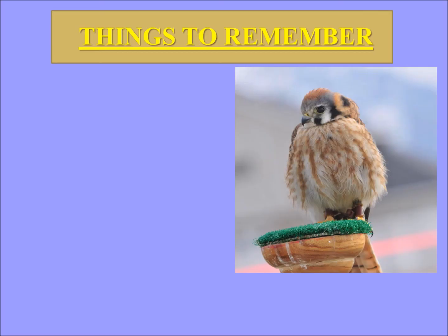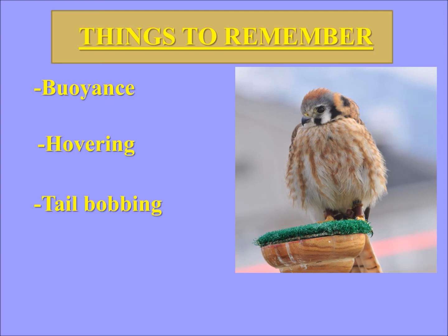Things to remember if you're trying to identify a kestrel: First of all, they're very buoyant. For their size, they have very little weight holding down their wings, so they're buoyant — very similar to a butterfly. They can hover in one place, so if you see a falcon hovering, you pretty much automatically know it's a kestrel. The other falcon species do not hover. They also bob their tail — while perching, they often bob their tail up and down repeatedly. No other North American falcon species does this. And what is it hunting? If you're in the United States and you see a falcon hunting insects or mice, it very likely is a kestrel. Most of the other falcon species tend to hunt birds. It's not always the case, but it's a good general rule.